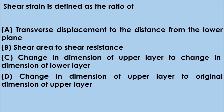Question No. 6: Shear strain is defined as the ratio of — Option A. Transverse displacement to the distance from the lower plane, B. Shear area to shear resistance, C. Change in dimension of upper layer to change in dimension of lower layer, D. Change in dimension of upper layer to original dimension of upper layer. The correct answer is option A. Shear strain is defined as the ratio of transverse displacement to the distance from the lower plane.